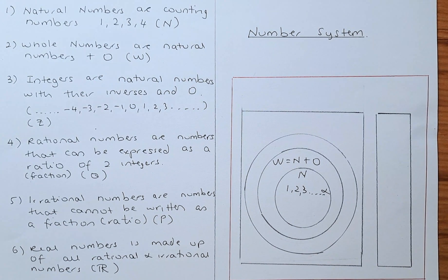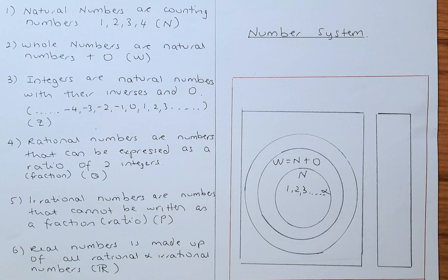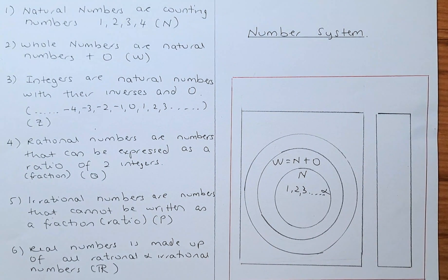So all natural numbers are whole numbers. Remember, there's like a hole - zero is like a hole. So that is how you remember the whole number.